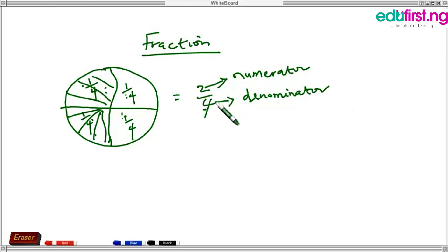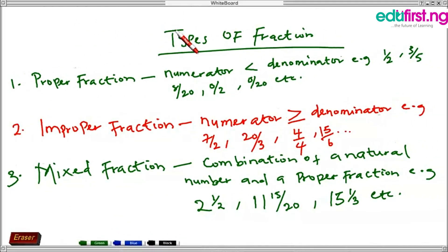Types of fraction: we have basically three types of fraction - proper fraction, improper fraction, and mixed fraction. Here, the proper fraction is a kind of fraction whereby the numerator is less than the denominator. Examples: 1 over 2, 3 over 5, 8 over 20, 0 over 2, 0 over 20, and so on.